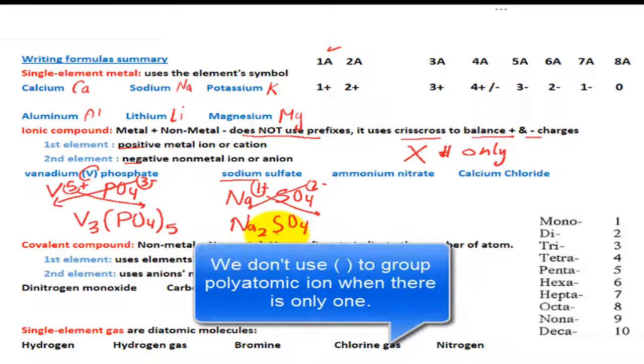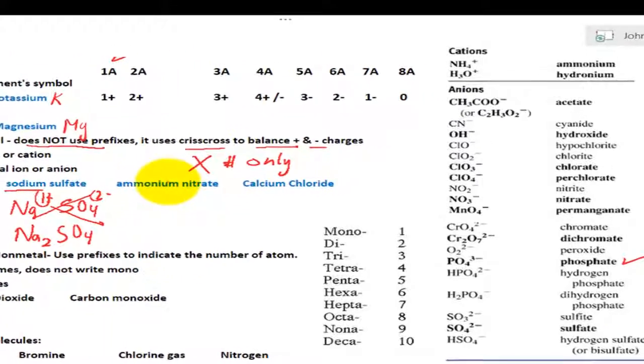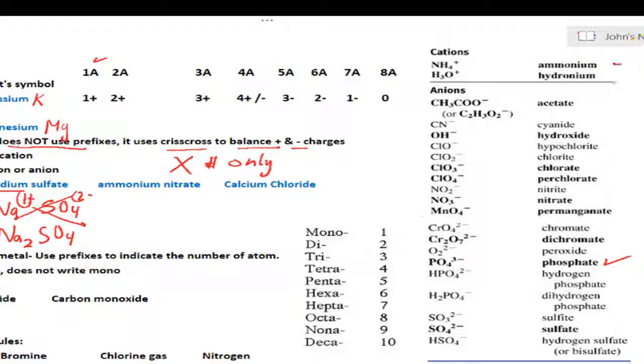The next one is ammonium nitrate. Ammonium is a positive charge polyatomic ion, which is NH4 1+.